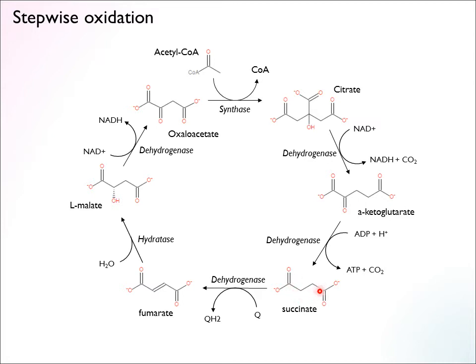We then have a sequence of reactions that oxidizes succinate further. First, we oxidize this part of the molecule — these carbons — to make a double bond, giving us fumarate. The electrons are captured via the quinone electron carrier. Then there is a hydratase step, which is also a bit of an oxidation, although we don't extract energy into energy carriers here. This gives us malate. And in a final step, there's another dehydrogenase that extracts energy again, giving us another NADH.